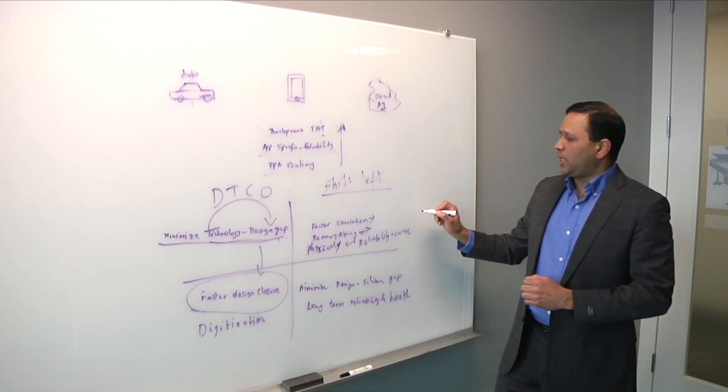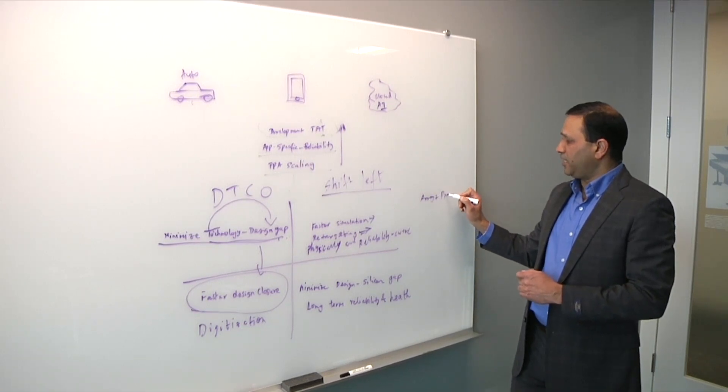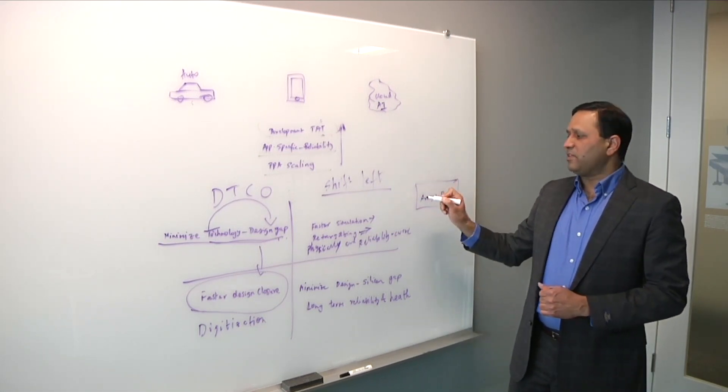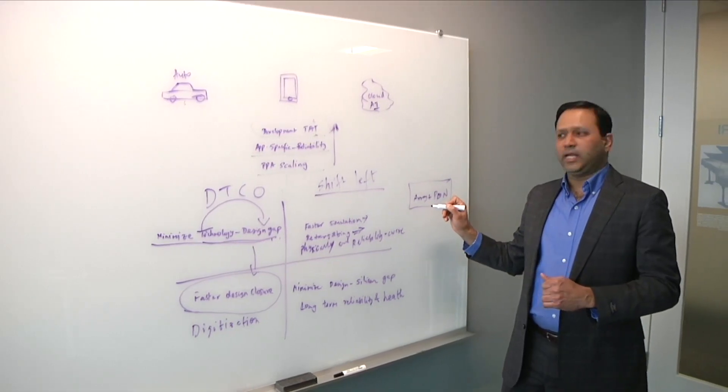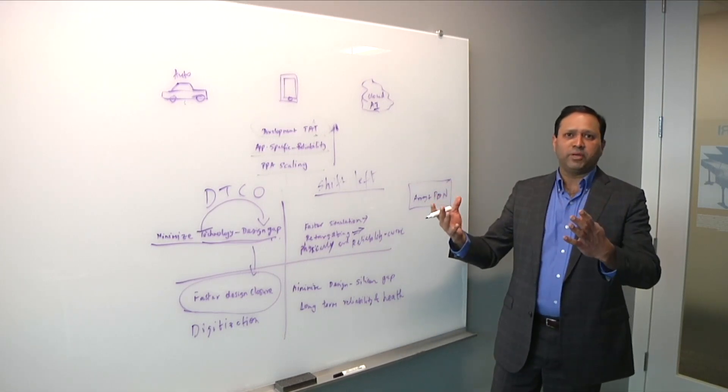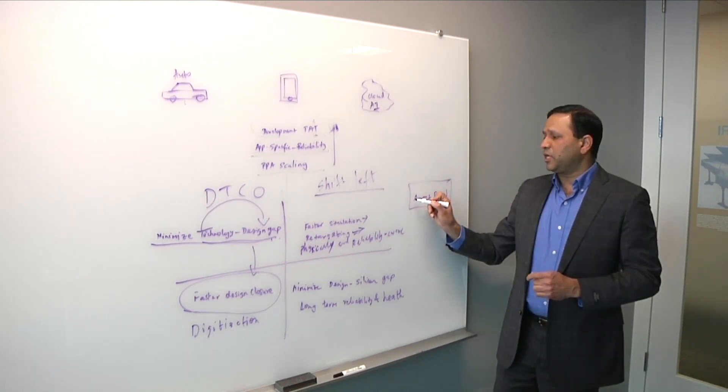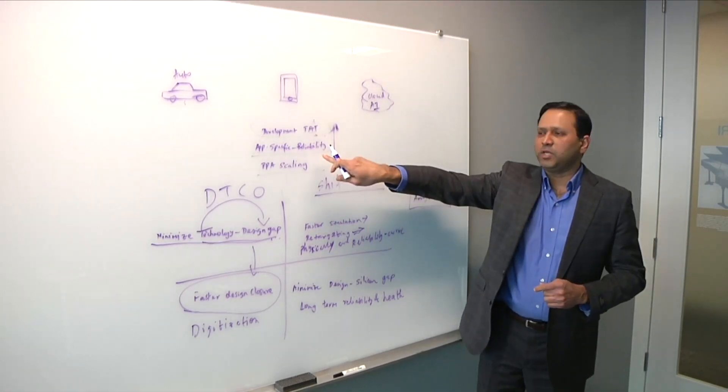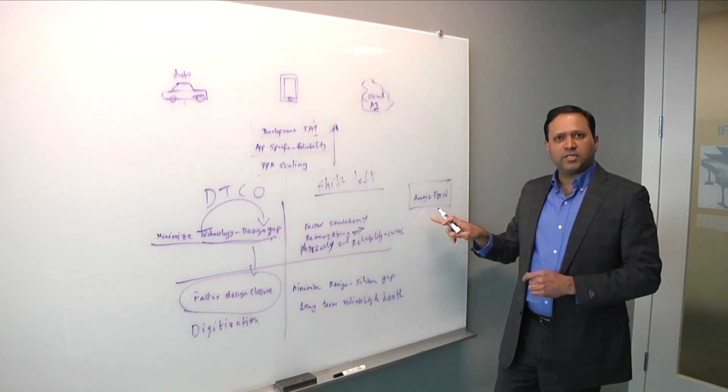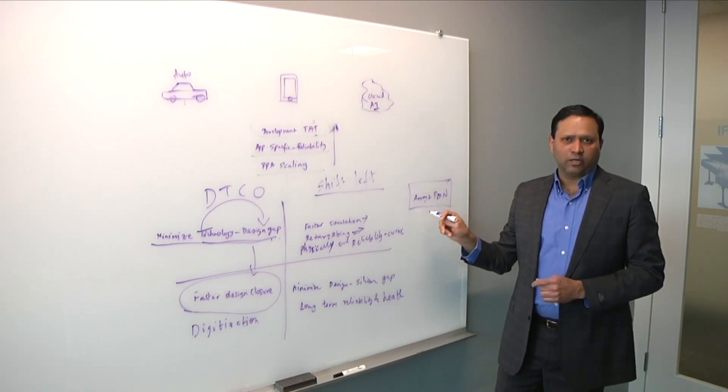So now the concept of simulating an entire array plus the power delivery network, as they call it, which is basically the power and the ground together. So this is becoming an important requirement now. Previously, the entire industry used to view this as an unsolvable problem because of the capacity needs and the simulation runtime needs. Think of a large memory array with parasitics, with the entire power delivery network. We are talking about millions and millions of elements in the design. Now it's becoming a requirement because the need to be able to make sure that your designs are robust and reliable and resilient means that you have to be able to simulate with the power delivery network to capture the effects of the power delivery network. And this becomes one of the critical requirements now.